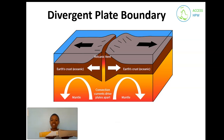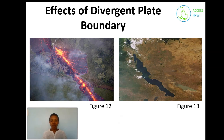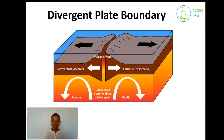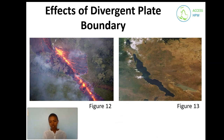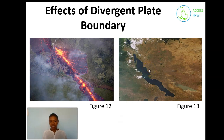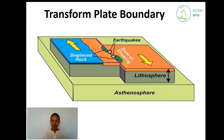The second type of plate boundary is divergent plate boundary — when plates move away from each other. When plates move apart, volcanic eruptions occur as shown in figure twelve, but notice the difference from figure ten: because the plates are moving away, there is more space for magma to escape, making volcanic eruptions easier. The formation of lakes is also one of the effects of divergent plate movement.